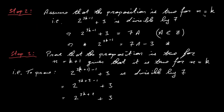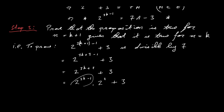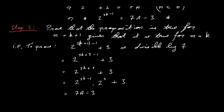We're assuming the proposition is true for n equals k, so 2 to the power of 3k minus 1 plus 3 is divisible by 7. We rewrite the expression as 2 to the power of 3k minus 1 times 2 to the power of 3, plus 3 — because adding the powers: minus 1 plus 3 gives plus 2. Now we substitute 7a minus 3 in place of 2 to the power of 3k minus 1.